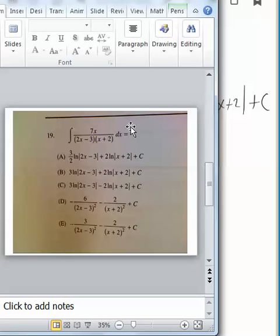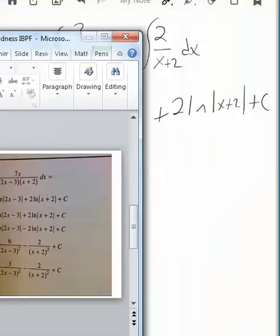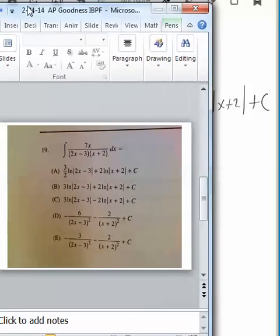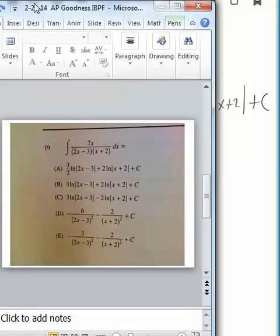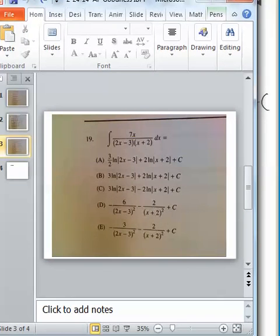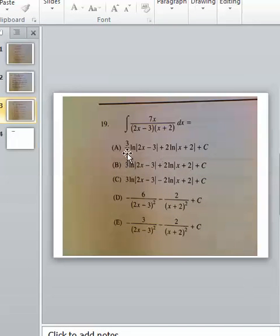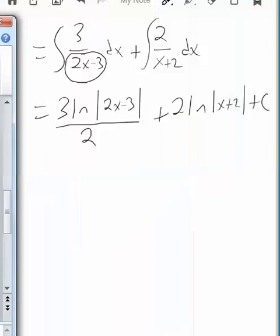And so I think we've got that as a choice somewhere. Let's see. A is 3 halves ln 2x minus 3, 3 halves ln 2x minus 3 plus 2. Oh there it is, just A. 2 ln, right. That kind of worked out. We didn't have to check too many of them. Looks like it's just a perfect match for A. There's nothing we can simplify and everything kind of works itself out.